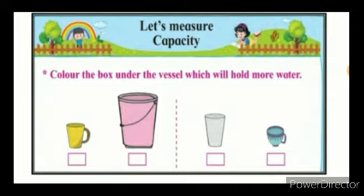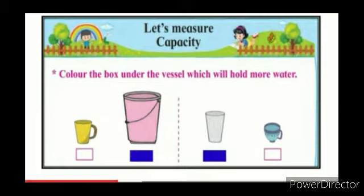Here you are observing the first two things. In the first picture, the bucket will hold more water, so we have to color under the bucket. In the second picture, between the glass and the cup, the glass will hold more water. You children also color page number 62 — you have to color it yourself.